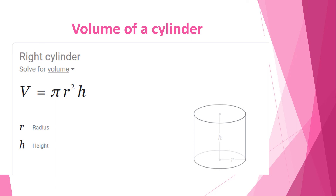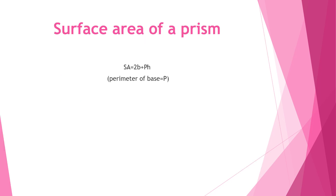For the volume of a cylinder we have the formula V equals pi r squared times h, where R represents the radius and H represents the height, and pi is always constant.